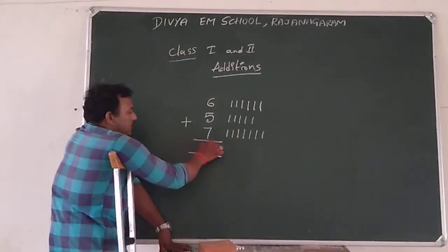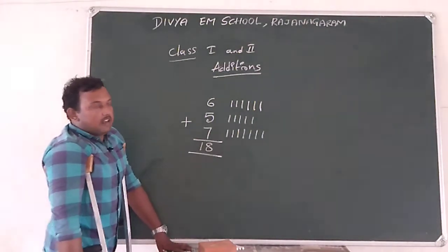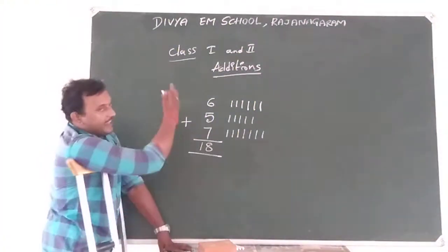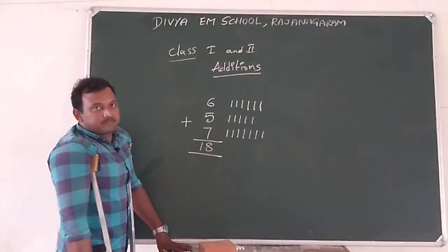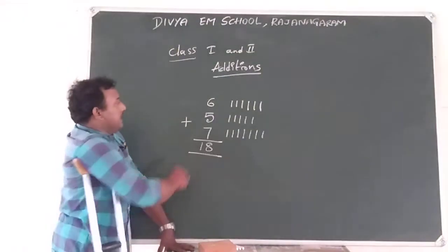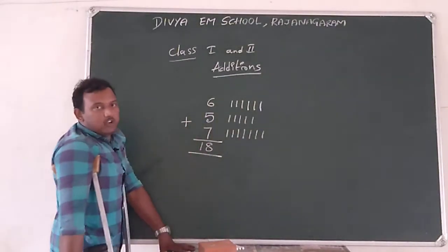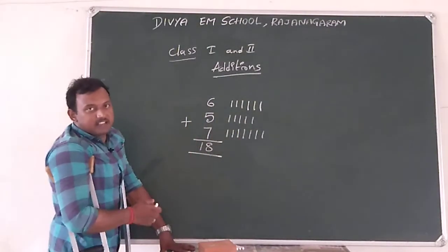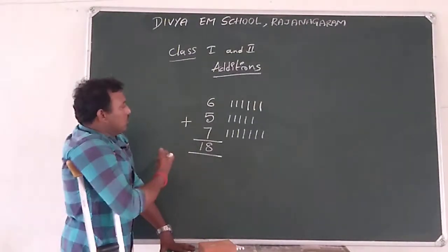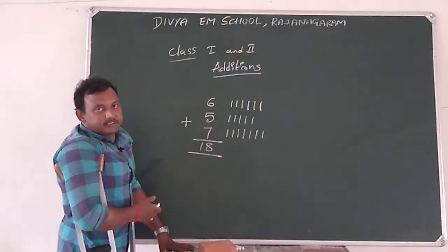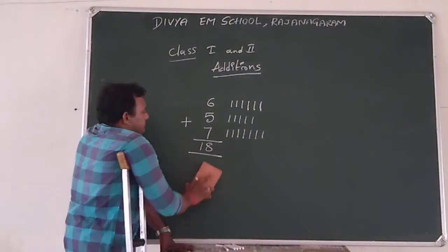We are going to make 18 here. Like this, we can add any numbers — 4 numbers, 6 numbers. We are going to do like this. All the numbers we can count like this.